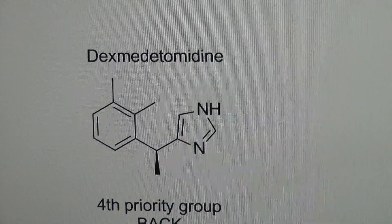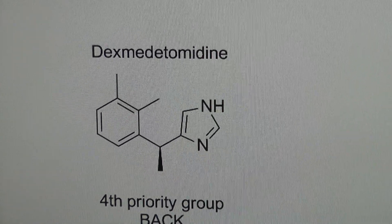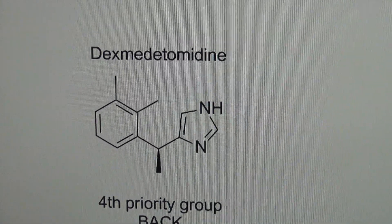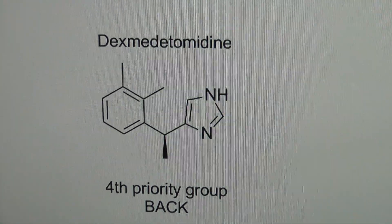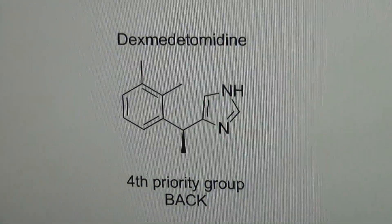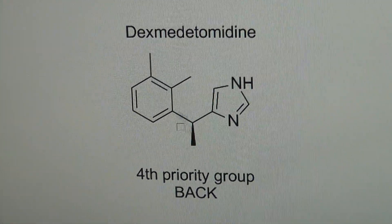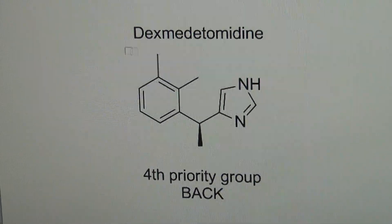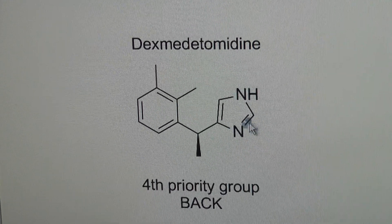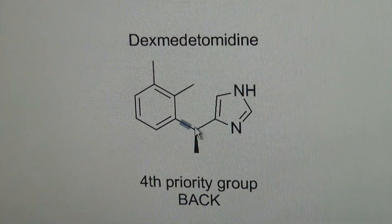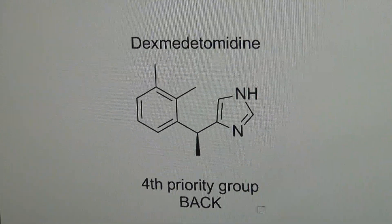Now let's look at some other examples. Here we have a molecule — dexmedetomidine, you can see the name right there. Consider where the asymmetric carbon is first of all. It's easy if you just look for the wedges, but sometimes you won't notice them. This is an aromatic group over here, so the only asymmetric carbon is this one right here. This is also an aromatic group on this side.